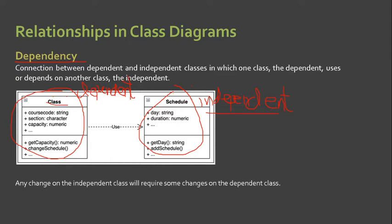This association is represented by a unidirectional line. If you can see a dashed line with an open arrow that points from the Class to the Schedule, this is what we call the unidirectional line. The dependent Class is pointing to the independent class because the Class uses the Schedule.